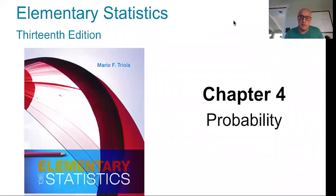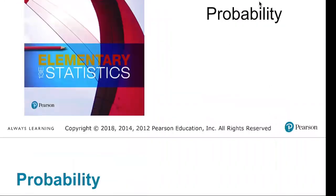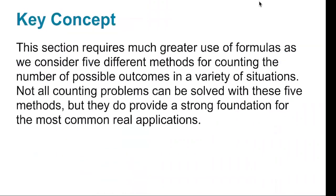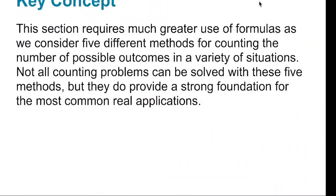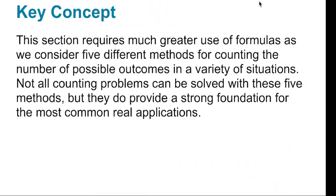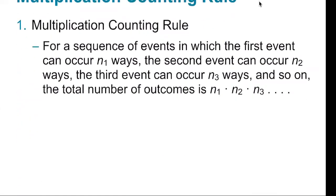Okay, last section in probability. We're going to learn different counting methods because probability is really based on total number of outcomes and then the number of ways that an event can occur. I'm not so sure that I agree with the book here that there are five different methods. I suppose if you count all the different ones we'll see, there may be five. I tend to lump some of them together because they're the same concepts.